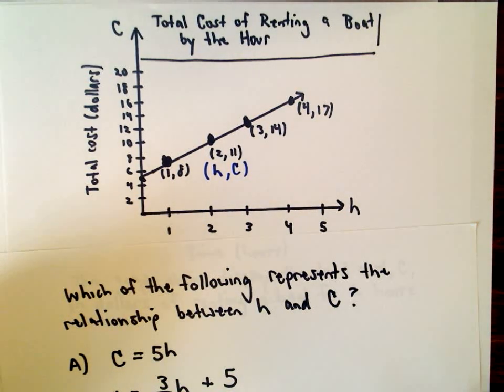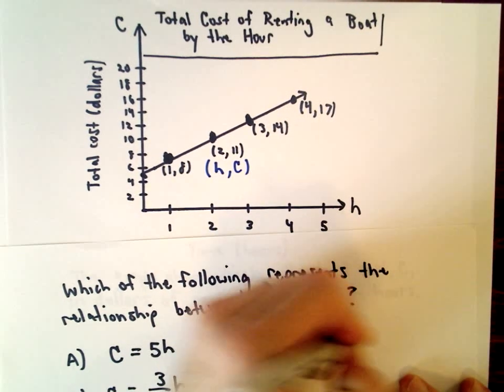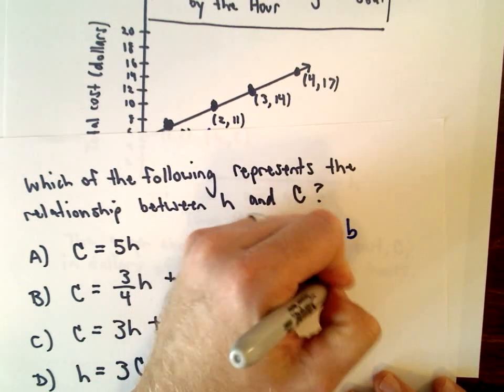So there's two ways to do this. If you wanted to, the way I would think about it is just thinking about it in terms of y equals mx plus b. Right, this is slope intercept form.